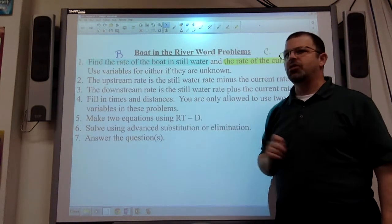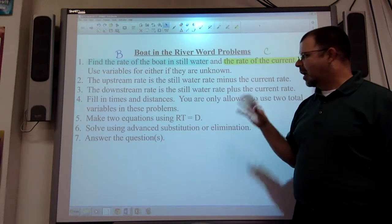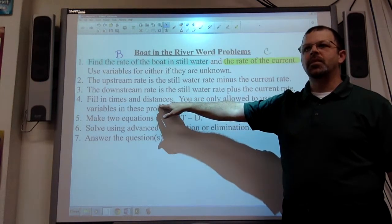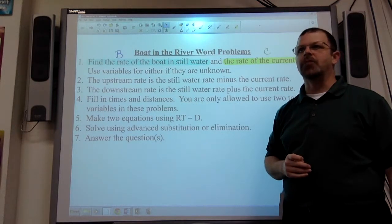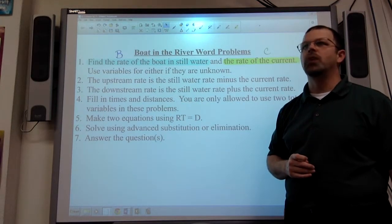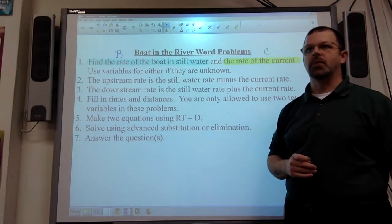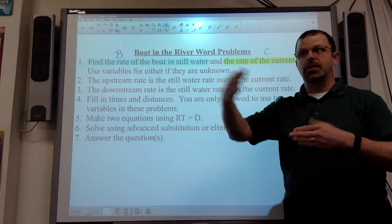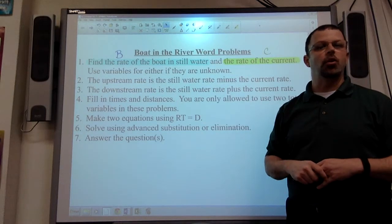The times and distances should be in there to be filled in like normal. Usually, they give you the distances. The boat can go 60 miles upstream in the same time it took to go 200 miles downstream. 60 downstream, 200 downstream at the same time T and T. So using variables like we normally do.